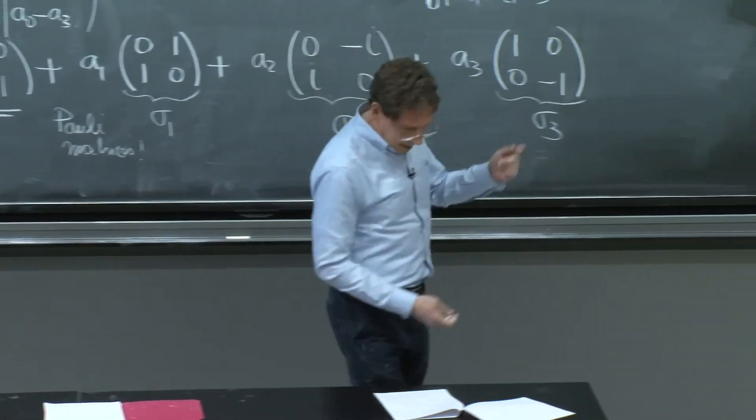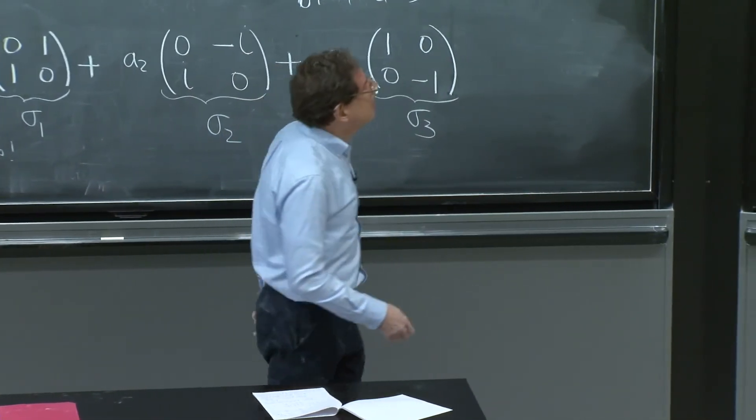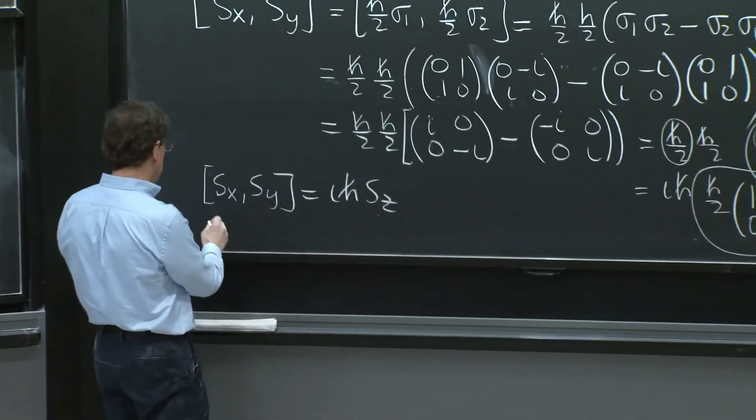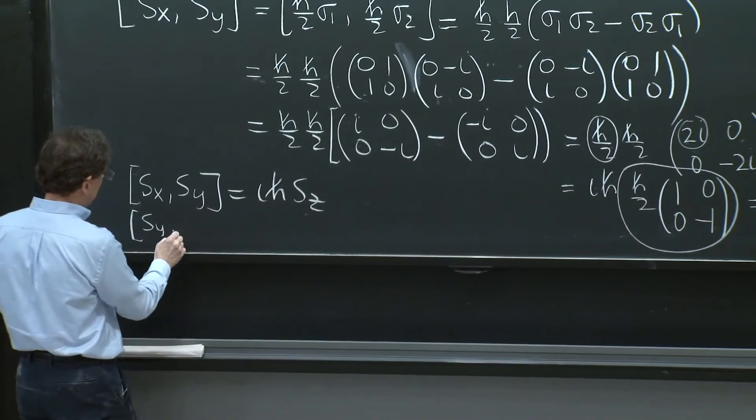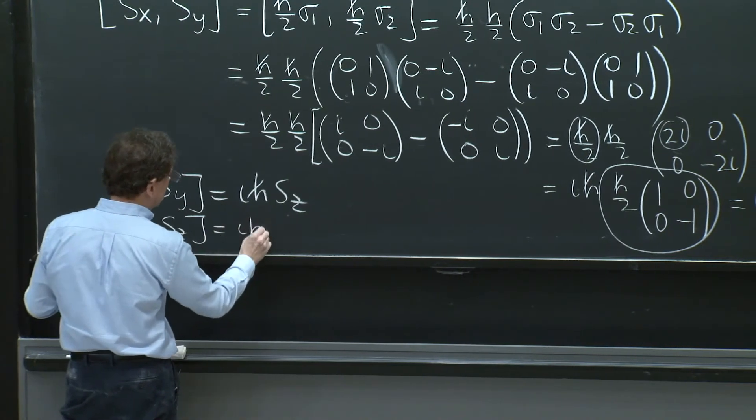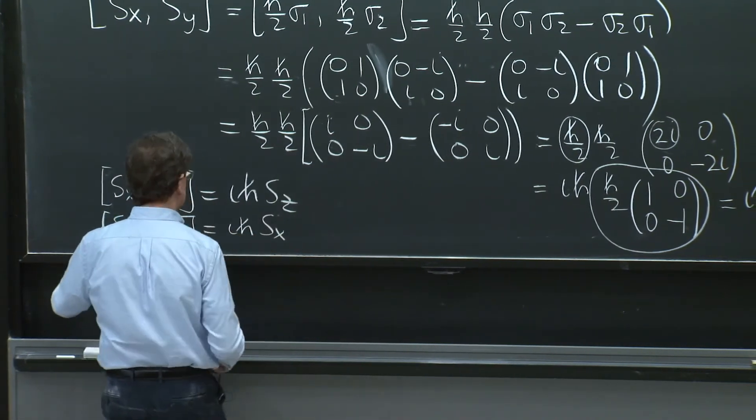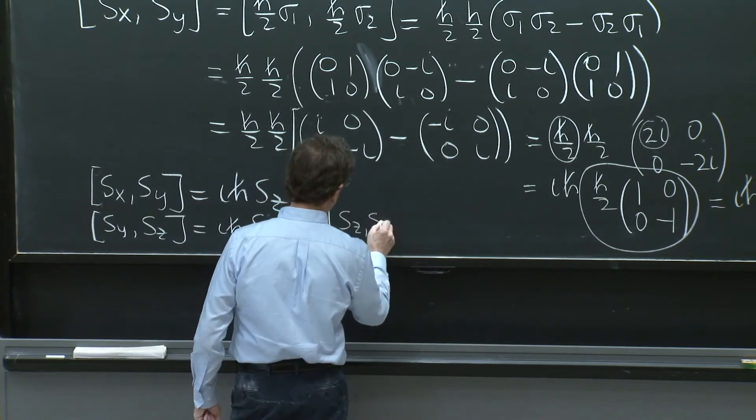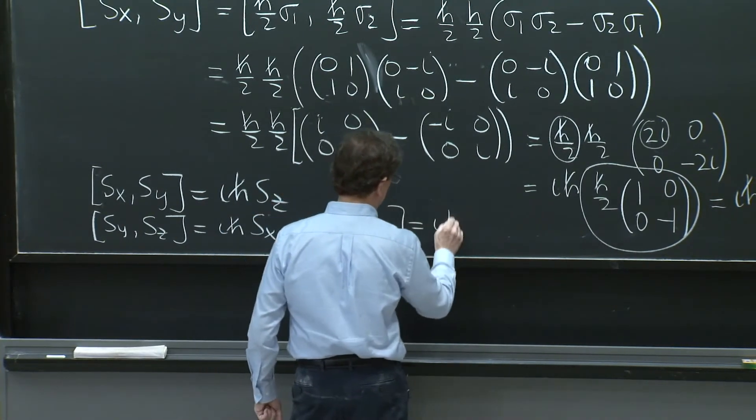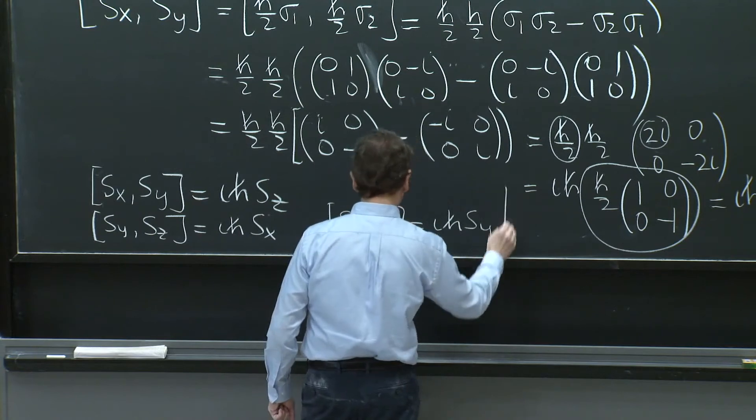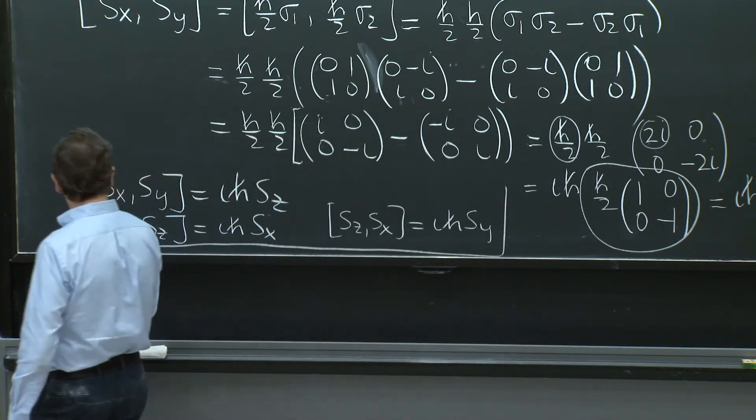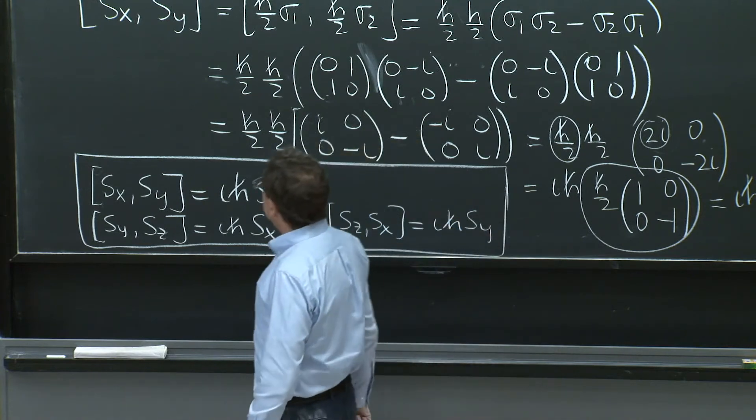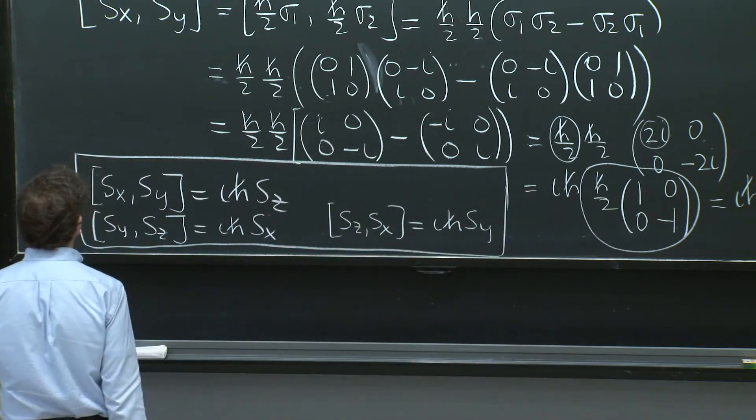So needless to say, the other commutation relations work out. So if you check that Sy with Sz, you will get ih bar Sx. And if you do, finally, Sz with Sx, you will get ih bar Sy. So these 2 by 2 matrices satisfy this property.